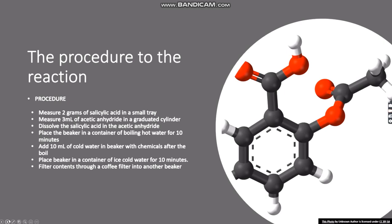The procedure for the reaction: Measure 2 grams of salicylic acid in a small tray. Measure 3 milliliters of acetic anhydride in a graduated cylinder. Dissolve the salicylic acid in the acetic anhydride. Place in a beaker of boiling hot water for 10 minutes.